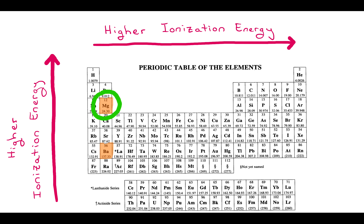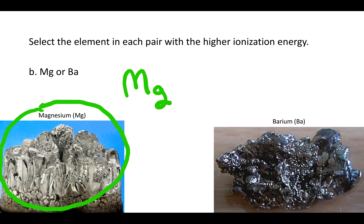Because magnesium is higher up, it has a higher ionization energy, and it's harder to rip an electron off of a magnesium atom than it is to rip an electron off of a barium atom.